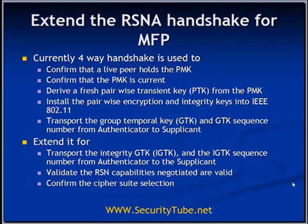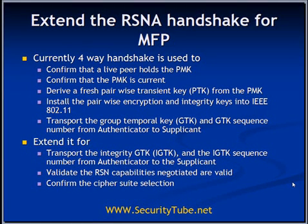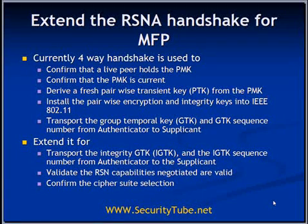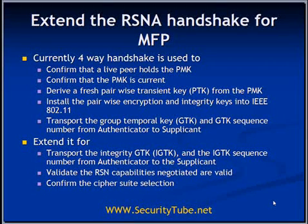After the 4-way handshake is successful, either party has the PMK, PTK, GTK, and the GTK sequence number. Now IEEE 802.11w extends this 4-way handshake to transport the integrity GTK or IGTK, and the IGTK sequence number, from authenticator to supplicant. So after PTK and GTK exchange, the IGTK or Integrity GTK exchange will take place. It is also used to validate the RSN capabilities and to confirm that the correct cipher suites are used.